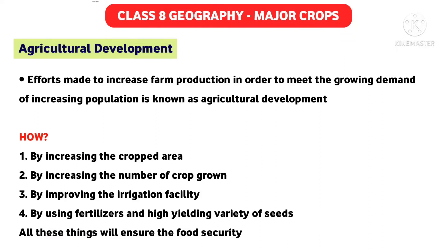The most important phrase here is the growing demand of an increasing population. With the increase in population day by day, demands are also increasing. If in a particular area, society, or country the population increases, demand will simultaneously increase. To make up for the supply and demand of the people, we should make efforts to increase production and cultivation. These efforts are ultimately known as agricultural development.